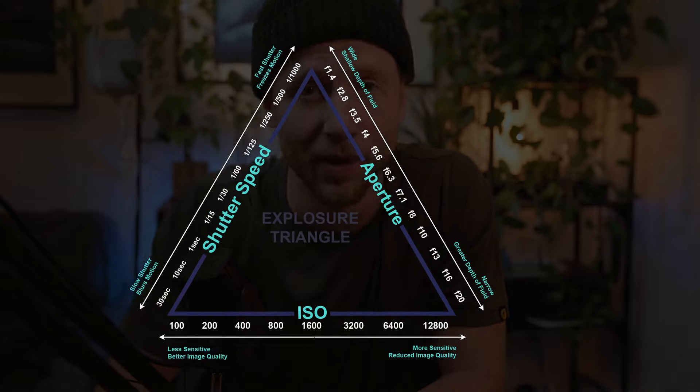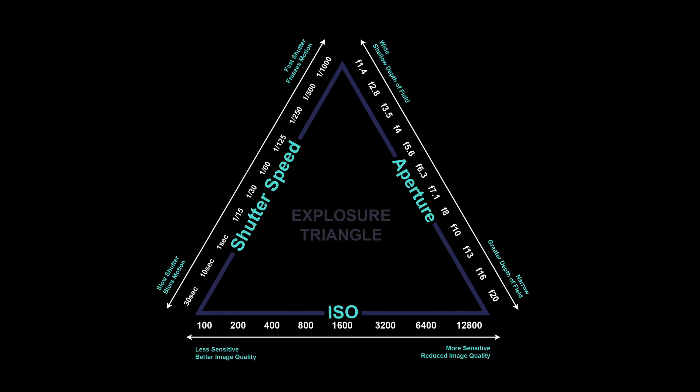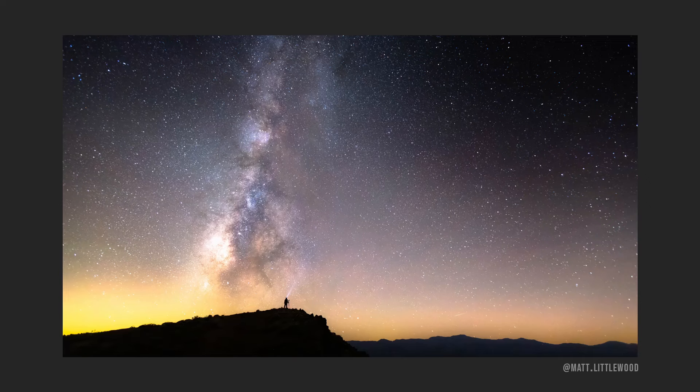Now pause the video here, draw out this exposure triangle — drawing it out will help lock it into your brain for you to refer to when you're out shooting and for the rest of the video. Now that the basic terms are covered, let's go over the different reasons to use long exposure in photography — for example, to capture dark scenes or to capture motion.